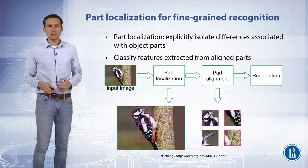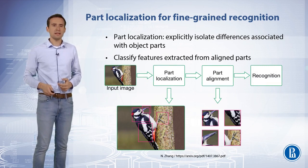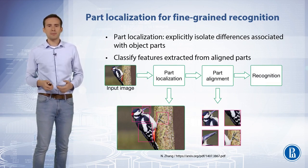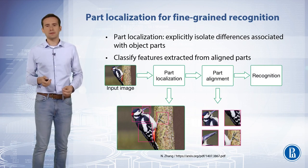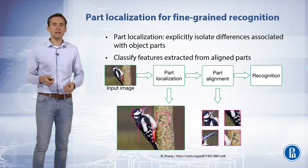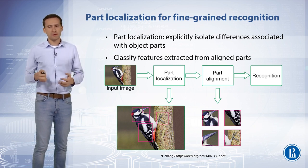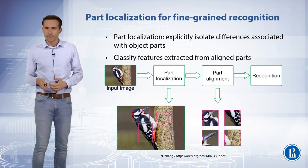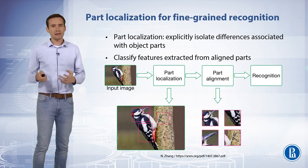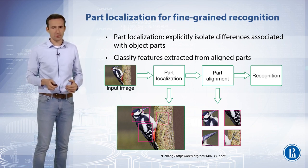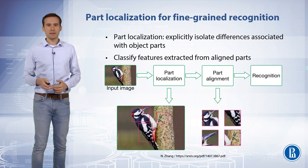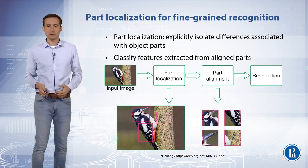Semantic part localization can facilitate fine-grained categorization by explicitly isolating subtle differences in appearance associated with specific object parts, such as the beak of a bird. Localizing the parts in an object is therefore important for establishing correspondence between object instances and discounting object pose variations and camera view position changes.